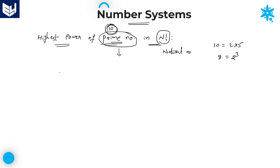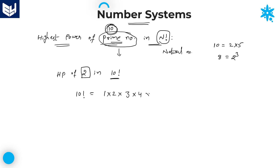I will explain with a small example how to calculate the highest power. Highest power of 2 in 10 factorial. As we all know, n factorial is a continuous product of n natural numbers. So 10 factorial equals 1 into 2 into 3 and so on, all the way up to 10. I will write all the numbers because understanding how to get the value is very important. 10 factorial means a continuous product of 10 natural numbers.